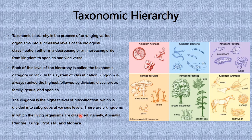The kingdom is the highest level of classification, which is divided into subgroups at various levels. There are five kingdoms in which living organisms are classified. In some textbooks you have a six-kingdom classification, but for today's lesson we'll be emphasizing the five-kingdom classification, which are namely Animalia, Plantae, Fungi, Protista, and Monera.